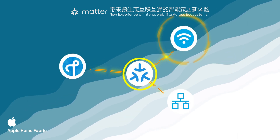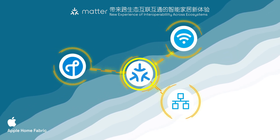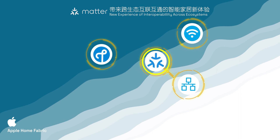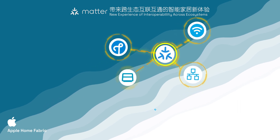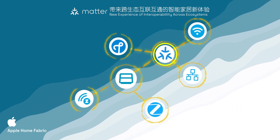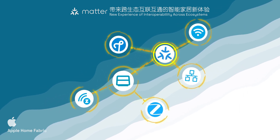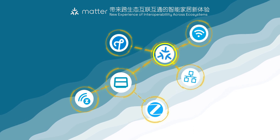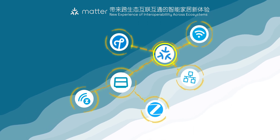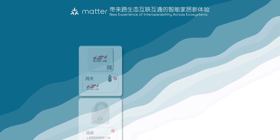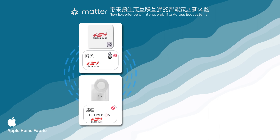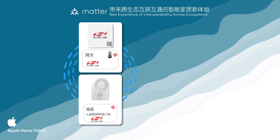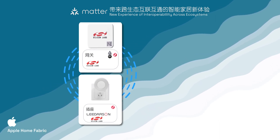Matter devices may use Wi-Fi, Thread, or Ethernet for communication. Matter also has bridge devices, helping non-Matter products based on other communication protocols join the Matter fabric. For instance, Liderson Zigbee plug is connected via a Silicon Labs bridge.